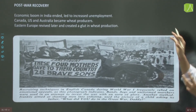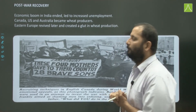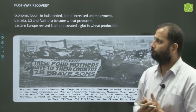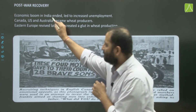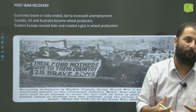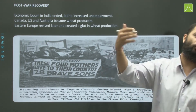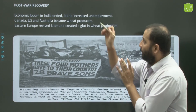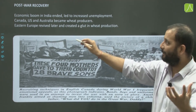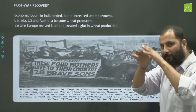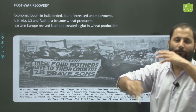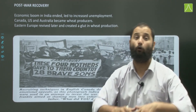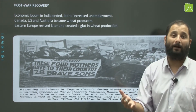In post-war recovery, the economic boom in India ended, leading to increased unemployment. Canada, the US, and Australia had become wheat producers during the war. When Eastern Europe revived later and resumed production, it created a glut in wheat supply. Over-production combined with unchanged demand caused prices to fall sharply.